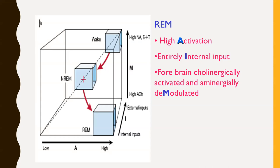This differential activity of the forebrain during REM sleep — cholinergic versus aminergic — plays a very important role in dream mentation and the hallucinatory nature of dreams. During wake, the aminergic and cholinergic inputs allow real-time comparison of what is happening from external input. But during REM sleep, when this capability of the forebrain is modulated and input comes predominantly as internal, we are not in a position to compare it in real time with external input, and so we experience dream-like hallucinations.